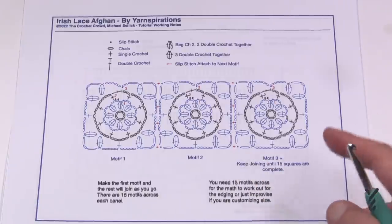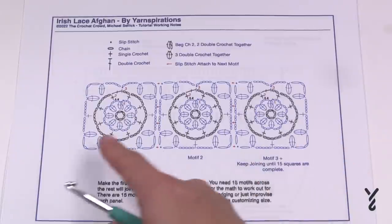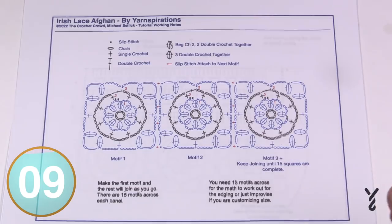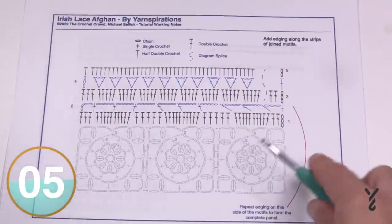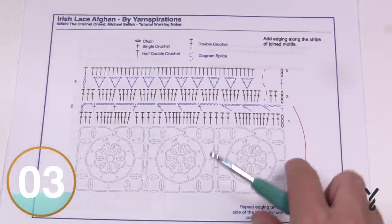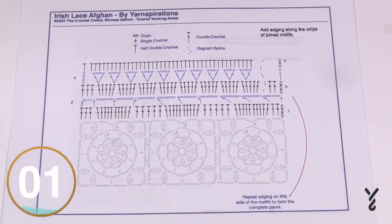So once you have your panel done and you need to make a total of seven of these strips that each have 15 motifs, you're then ready to build on top of it and you're ready to build each side of this. So let me just take a little bit of a breather and come right back.